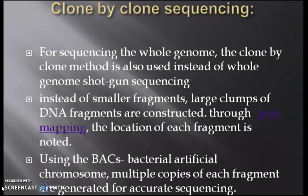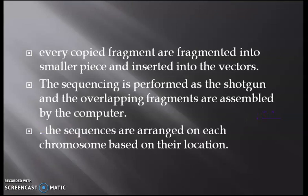The next method is clone-by-clone sequencing. For sequencing the whole genome, the clone-by-clone method is also used instead of whole genome shotgun sequencing. Instead of smaller fragments, large chunks of DNA fragments are constructed through mapping and the location of each fragment is noted. Using bacterial artificial chromosomes, multiple copies of each fragment are generated for accurate sequencing. Every copied fragment is then fragmented into smaller pieces and inserted into vectors. The sequencing procedure is similar to shotgun sequencing, and the overlapping contigs are assembled by the computer and arranged on each chromosome based on their location.